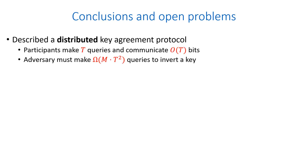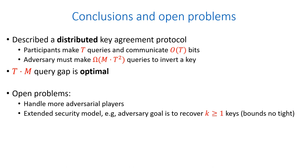In brief, we have described a distributed key agreement protocol in which participants make T queries to a random oracle and communicate order of T bits, while an adversary must make omega of M times T squared queries to a random oracle in order to recover the key. We have also shown that the query complexity gap of T times M between the honest players and the adversary is optimal. There are several open problems that can be further investigated, for example, handling more adversarial players or extending the security model so that the adversary's goal is to recover more than one key.